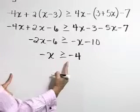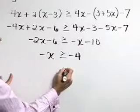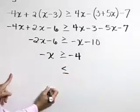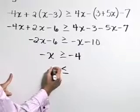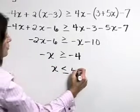And as the last step, let's multiply both sides by a negative 1, which is going to change the direction of our inequality symbol, giving us x is less than or equal to 4.